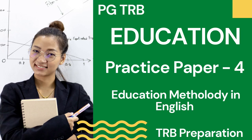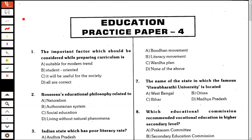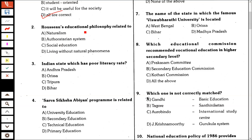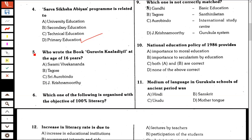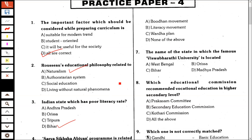BGDRB Education Practice Test. The important factor which should be considered while preparing curriculum is: all are correct. Rousseau's educational philosophy is related to naturalism. The Indian state which has poor literacy rate is Bihar. Sarva Shiksha Abhiyan program is related to primary education. Who wrote the book 'Guru'? In college at the age of 16 years — by J. Krishnamurti.